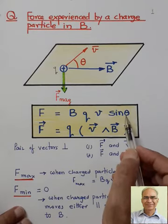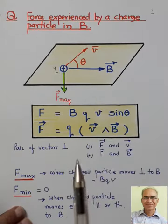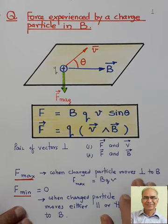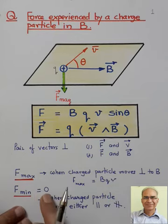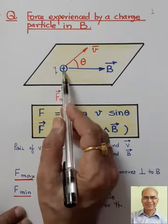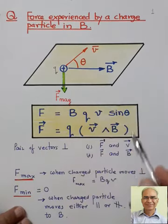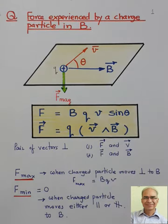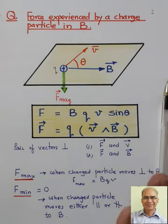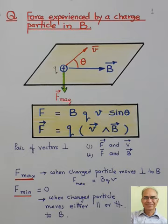Mathematically, the value of sin theta is maximum — equal to 1 — when theta becomes pi by 2. In simple language, when a charged particle enters the magnetic field perpendicularly, it will experience maximum force, and the formula for maximum force is BQV. If a charged particle moves parallel or anti-parallel to the magnetic field, sin theta becomes zero, so it does not experience any force.